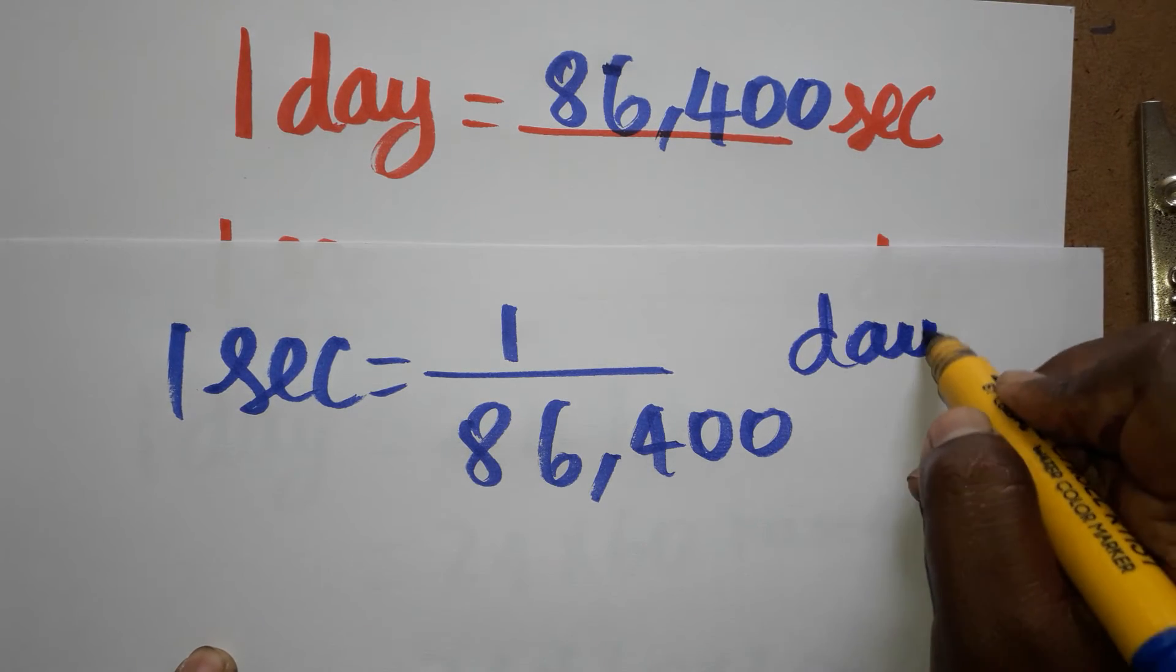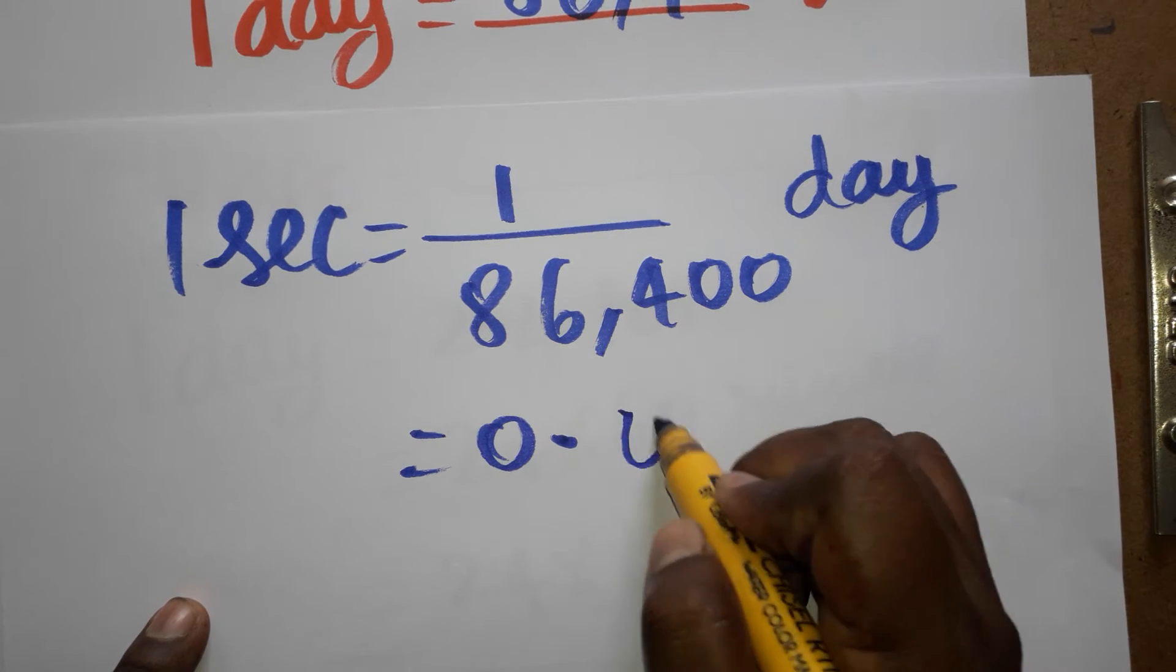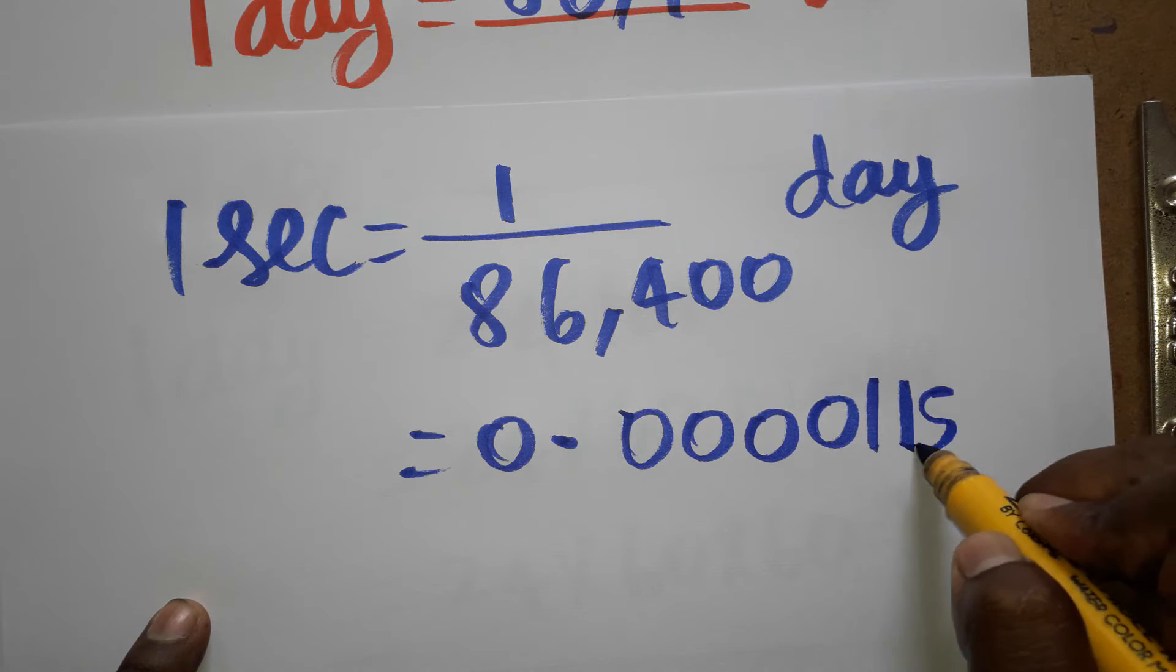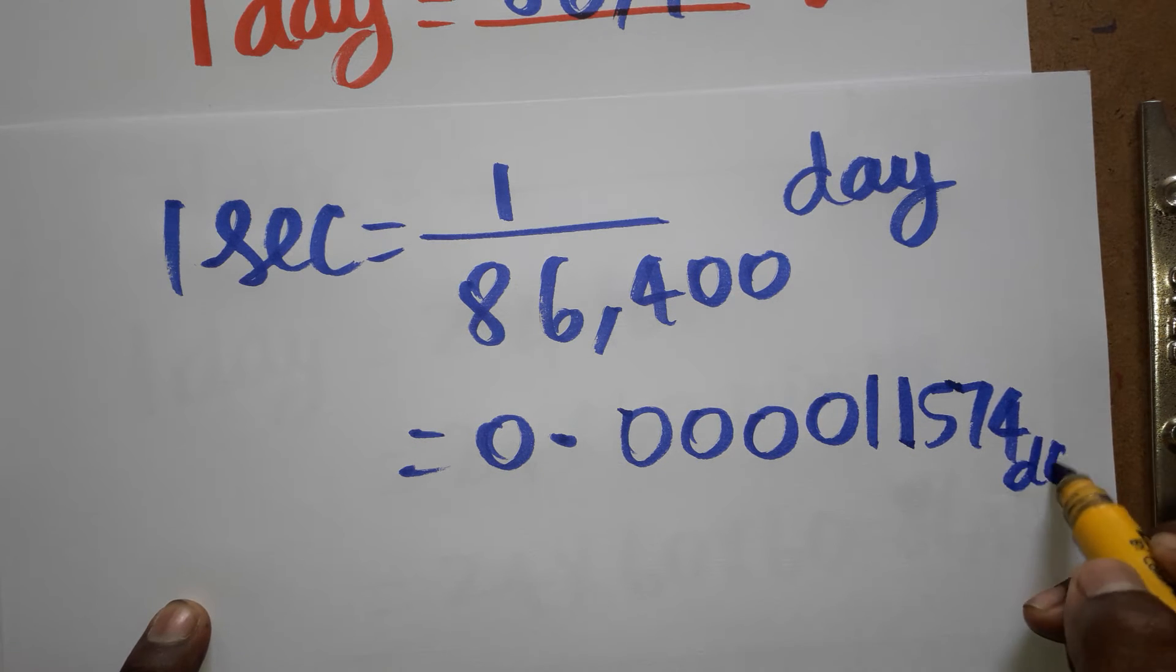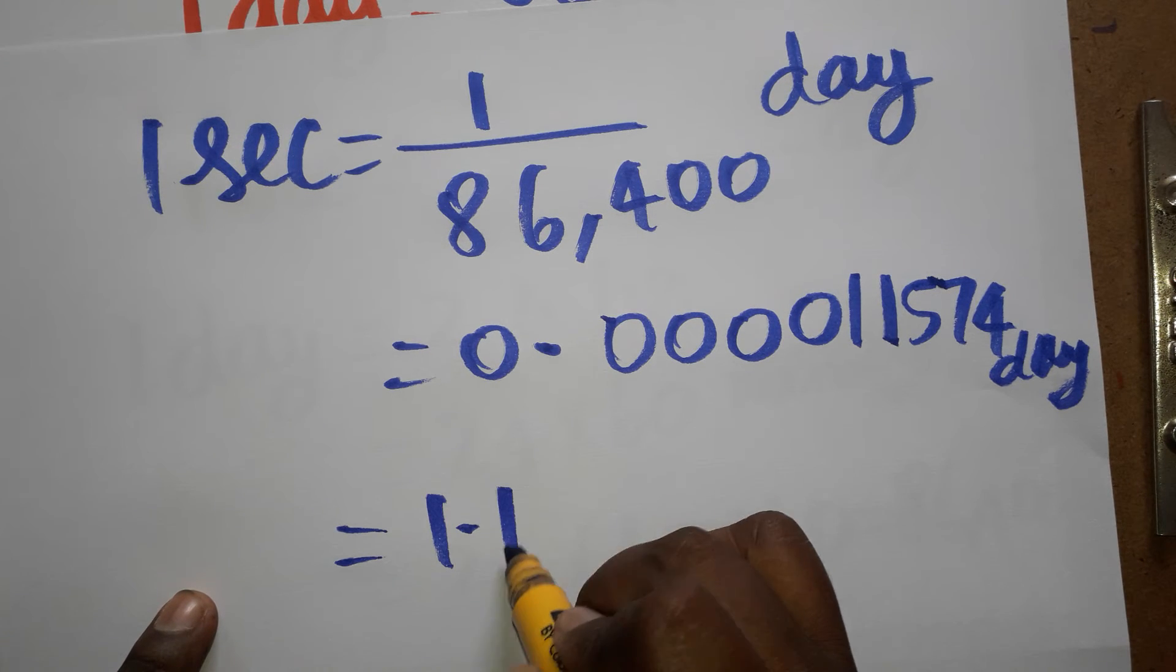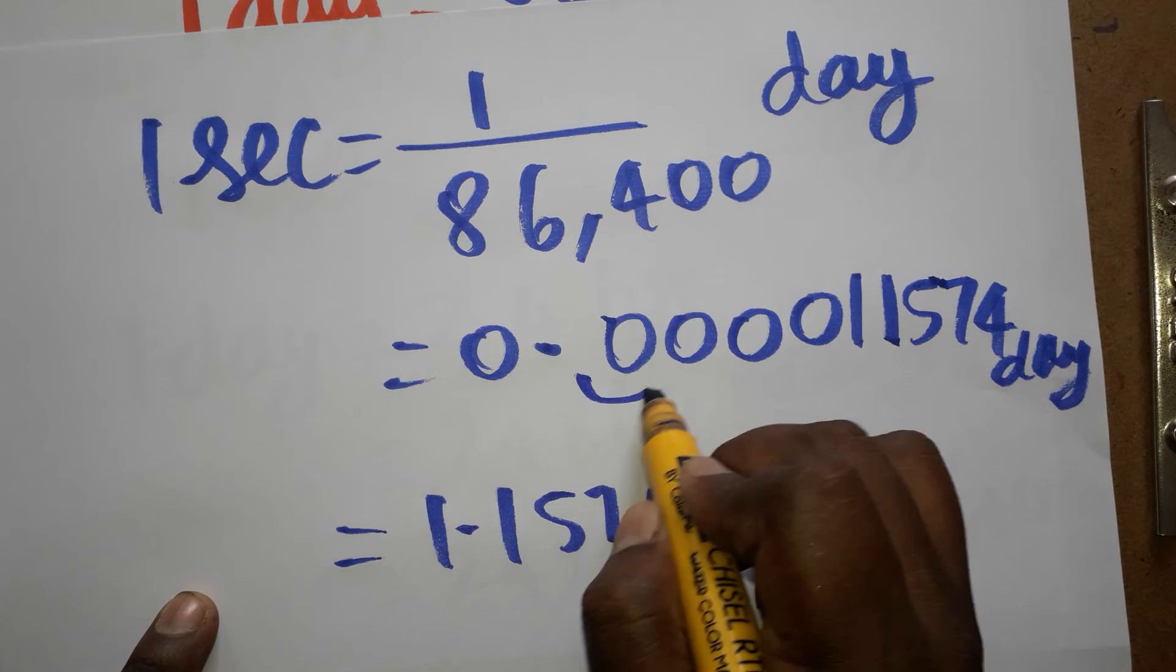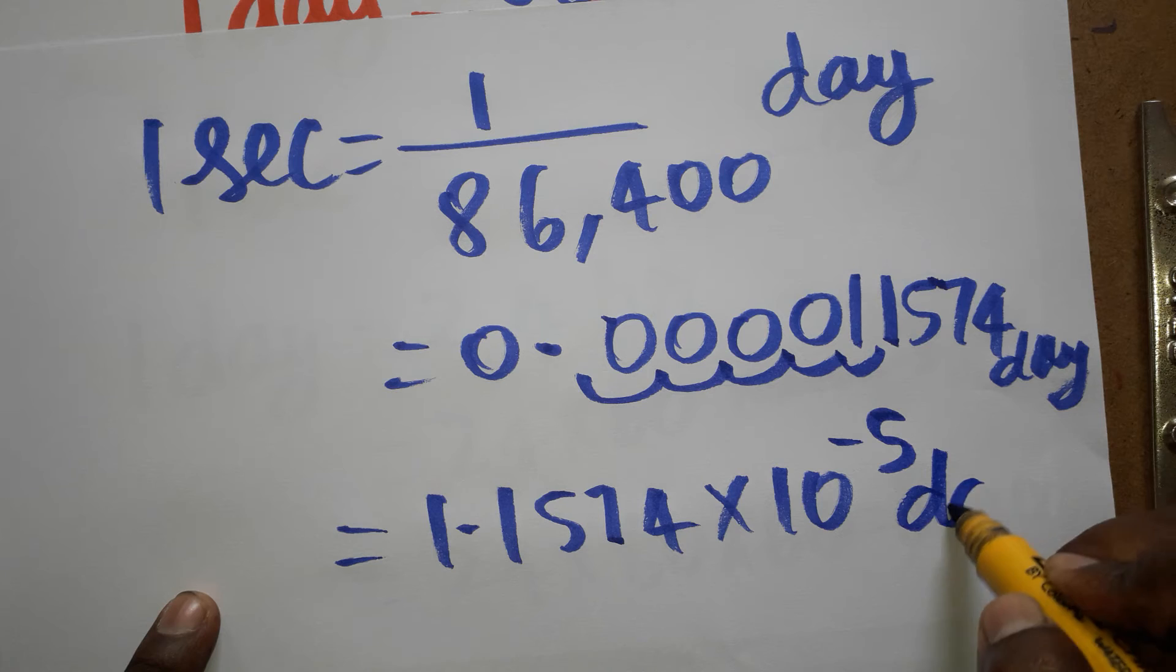Now this division will get us 0.000001157 day. So this we can write 1.1574 into 10 power 1, 2, 3, 4, 5 decimals - 10 power minus 5 days.